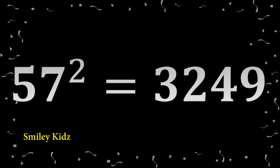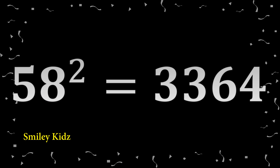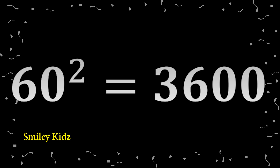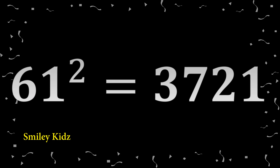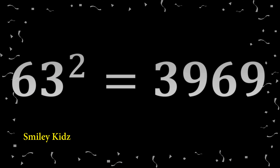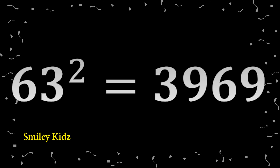57 square 3249. 58 square 3364. 59 square 3481. 60 square 3600. 61 square 3721. 62 square 3844. 63 square 3969.